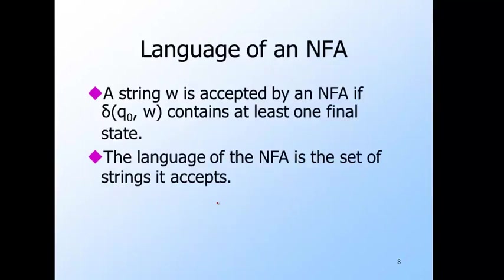The language of a non-deterministic automaton is simply the set of strings that it accepts. That is, the set of strings W such that when you compute delta of Q-naught and W — where Q-naught is the start state — you have a set that contains at least one final state.